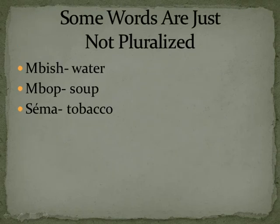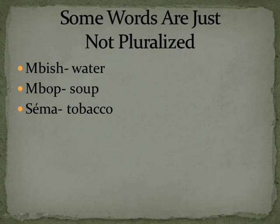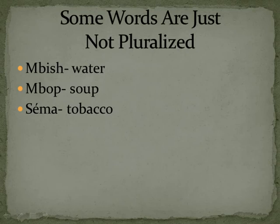Some words that just aren't pluralized: Bish, water. Bop, soup. Sama, tobacco. Obviously with water you could pluralize it if you said like five cups of water, but there you're actually pluralizing the cups, or five bowls of soup, or so many bags of tobacco. But you can't really quantify the liquid itself — in Potawatomi we just don't do that. It's just water, or it's soup. You're not quantifying how much it is, and you can't really count out the number of tobacco leaves.